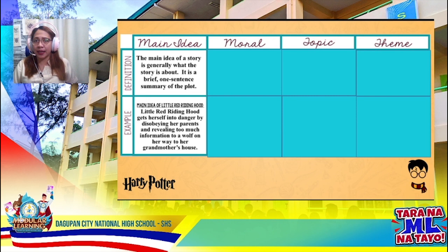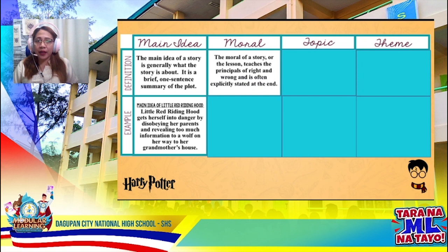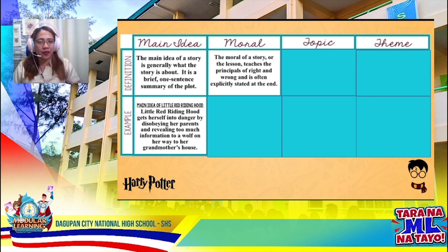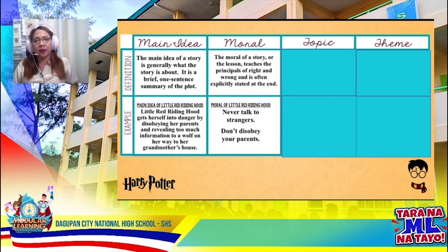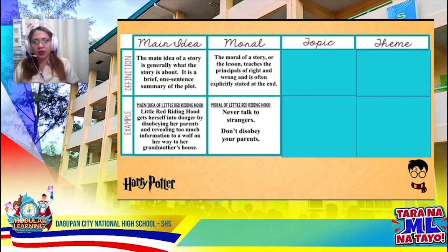What is a moral? The moral of the story teaches the principles of right and wrong, and it is often explicitly stated at the end of the story — we usually get the moral at the end. It teaches us the difference between what is right and what is wrong. Going back to Little Red Riding Hood, the moral of the story is that we should never talk to strangers, or we should obey our parents. It teaches us something and gives us the principles of always doing what is right.